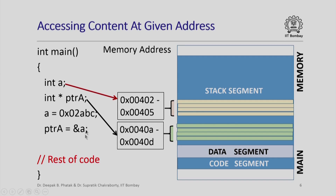Let us look at a simple C++ program where we will try to access the content at a given memory address. We have an integer variable A; an integer requires 4 bytes, and since each memory location stores just 1 byte, we allocate 4 consecutive memory locations for A. Pointer A is a pointer-type variable — a pointer to an integer. Assuming every memory address can be represented in 32 bits or 4 bytes, pointer A also requires 4 bytes allocated in the stack segment.